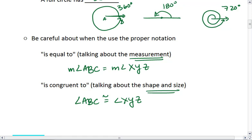So a little bit more about these proper notations. For example, if I had angle, let's change the color here. If I had angle A, B, C,